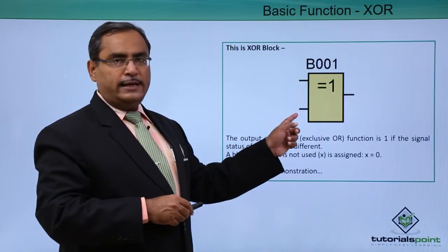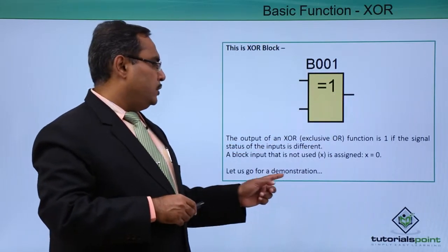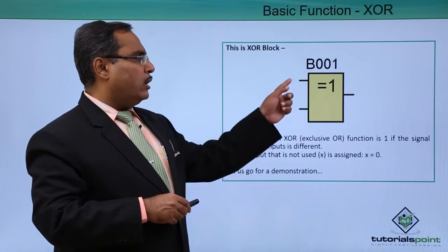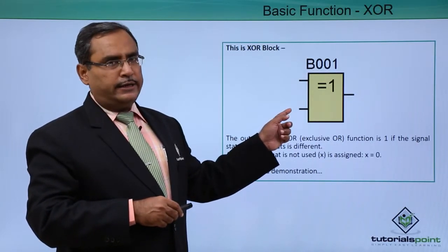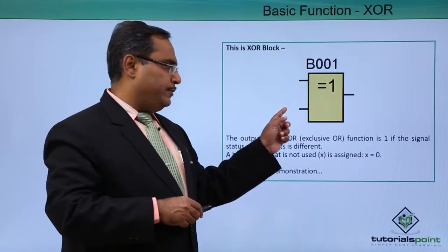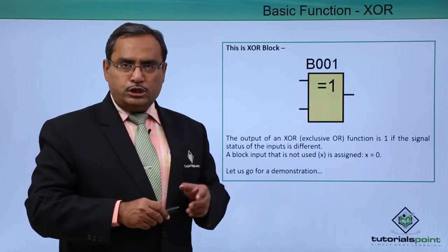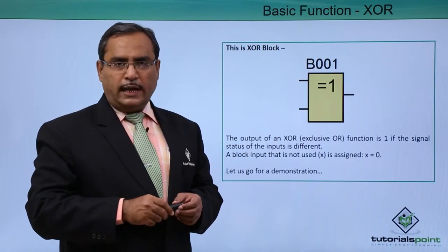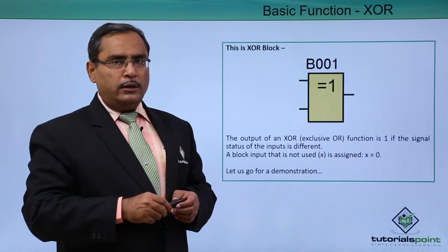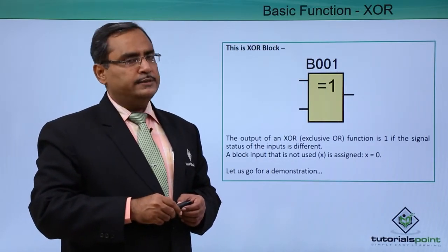Here it will be having two input lines and one output line. Whenever we are not connecting any one of the input lines, that unconnected or disconnected input line will be treated as connected with zero. We know the basic logic of XOR: when inputs are unequal, output will be one; when inputs are equal, output will be zero.